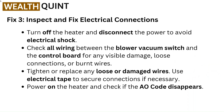Fix 3: inspect and fix electrical connections. Turn off the heater and disconnect the power to avoid electrical shock. Check all wiring between the blower vacuum switch and the control board for any visible damage, loose connections, or burnt wires. Tighten or replace any loose or damaged wires, and use electrical tape to secure connections if necessary. Power on the heater and check if the AO code disappears.